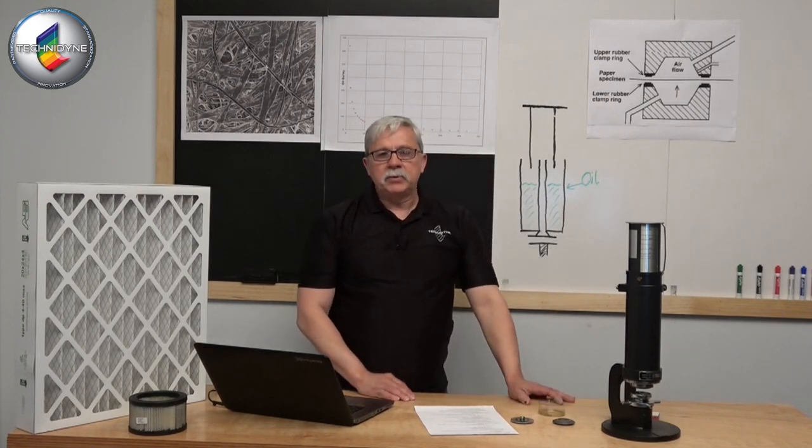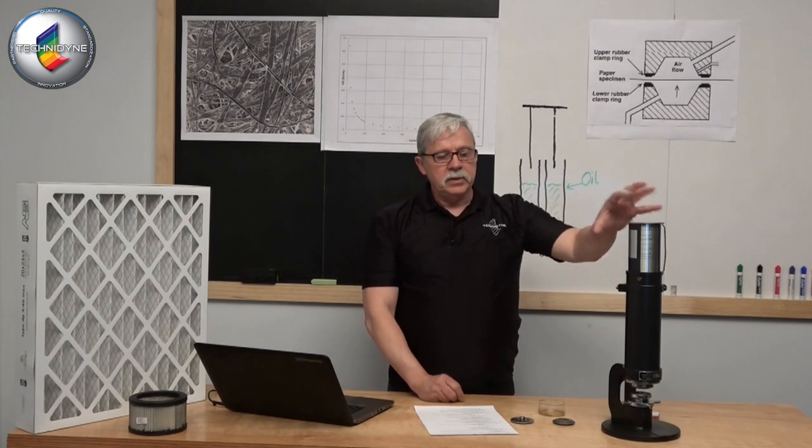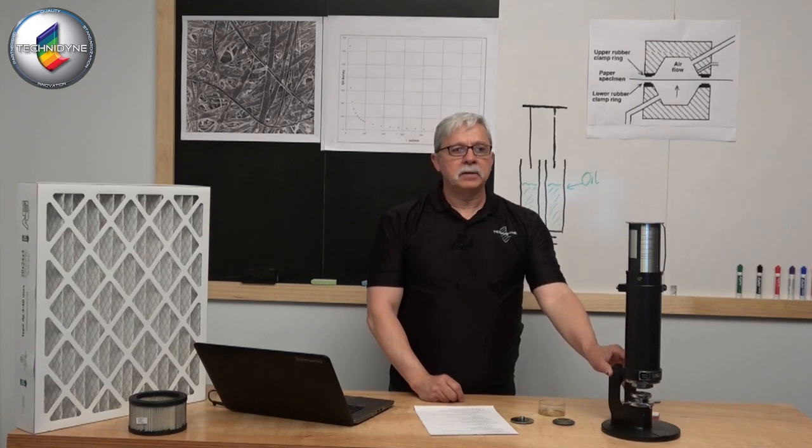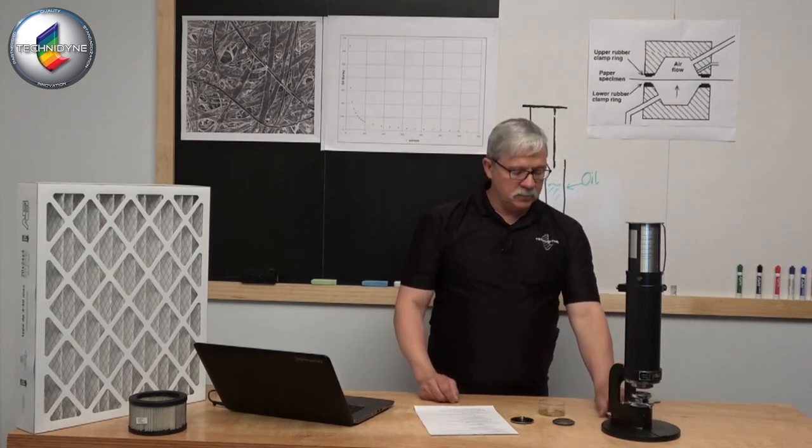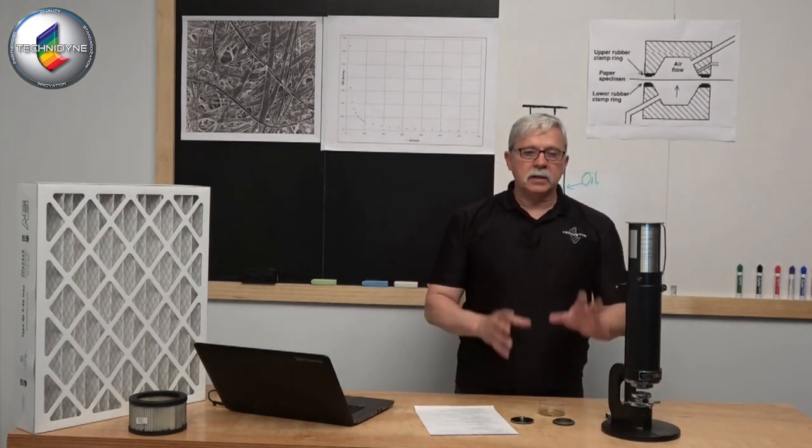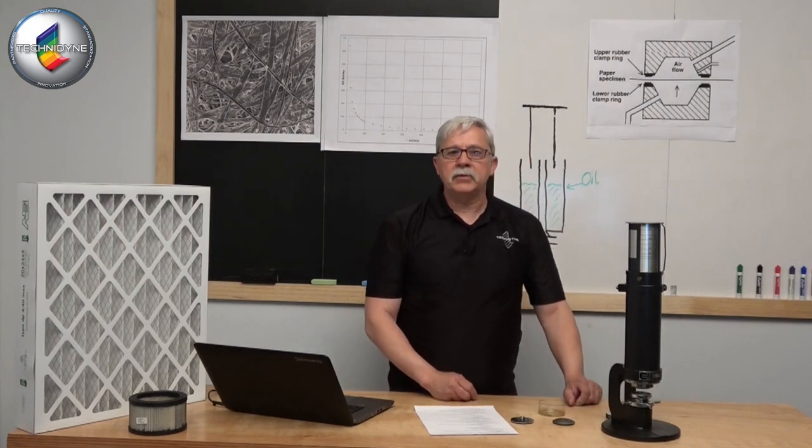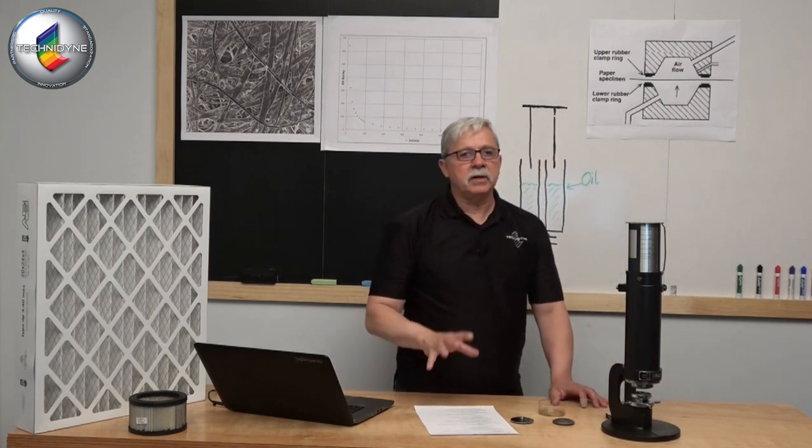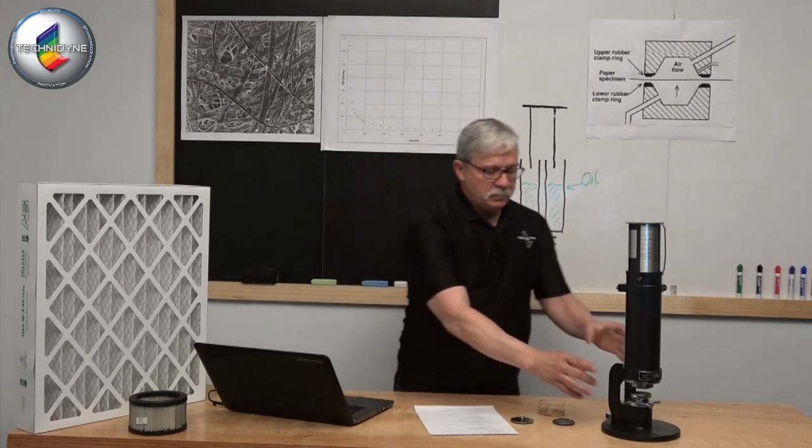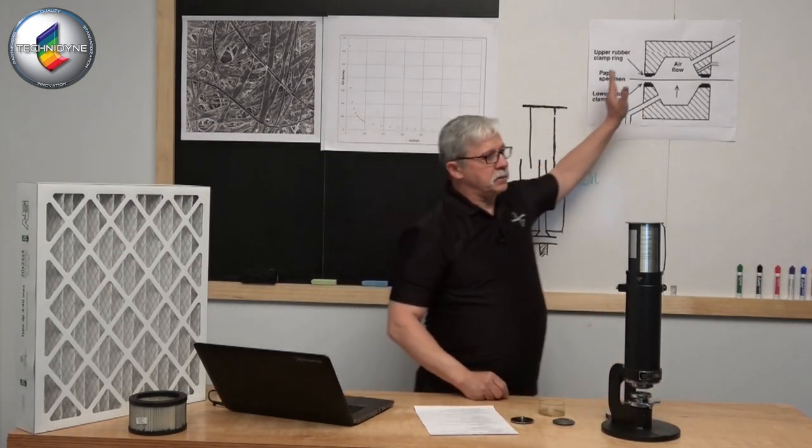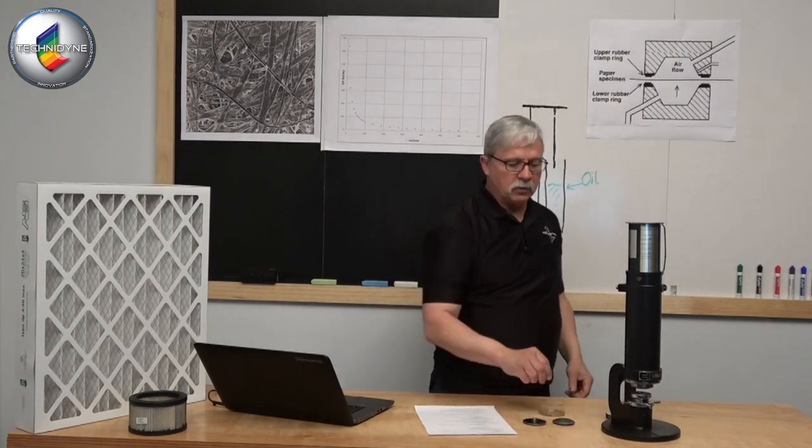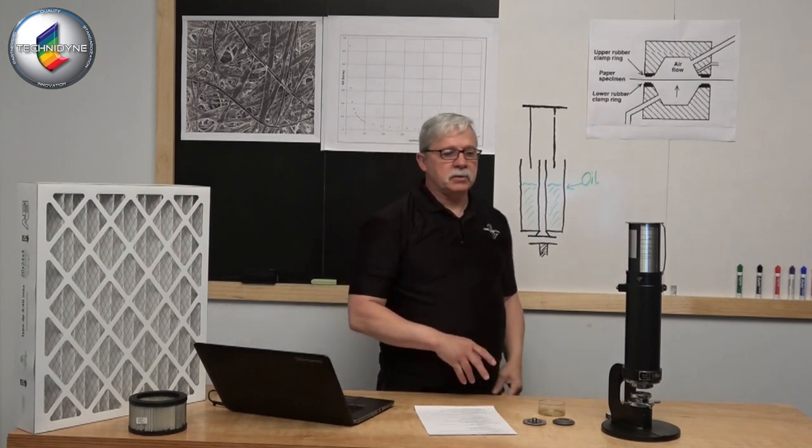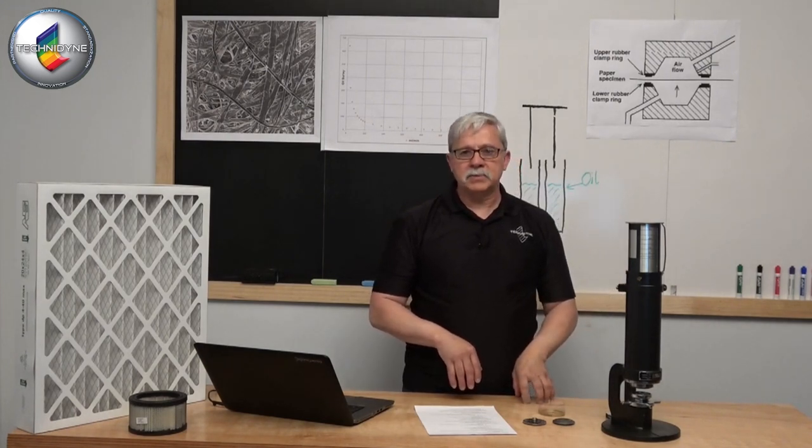When we start to get into producing some even tighter grades, this guy becomes somewhat non-useful. I don't want to dub it as something that you can't use, you start getting into some tighter grades. Now we're getting up into tens, maybe thousands of Gurley seconds. Now what Teleden Gurley had developed was another system that, in two ways, basically had the same clamping mechanism. So we're clamping the same area, and that happens to be one square inch for the Gurley method.